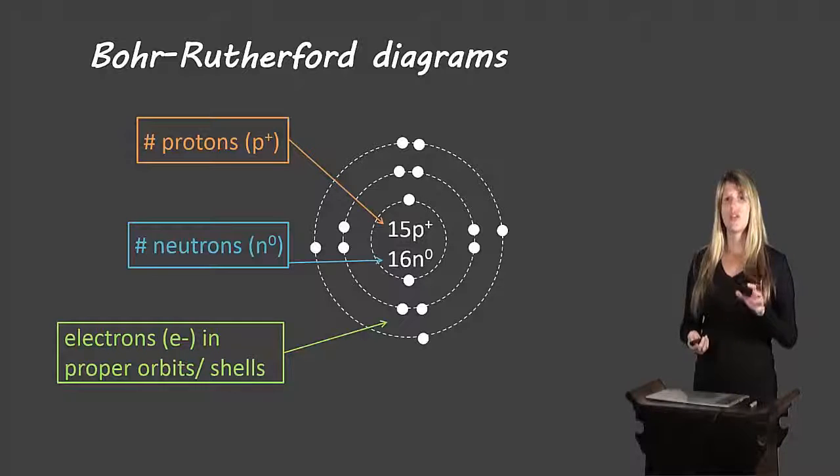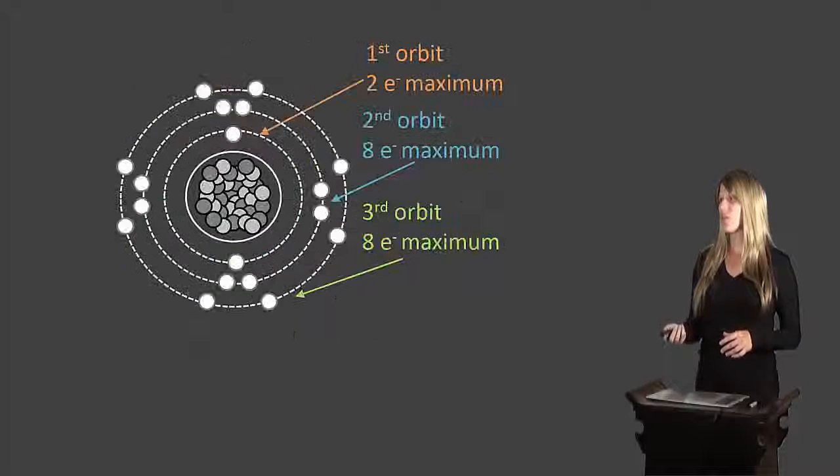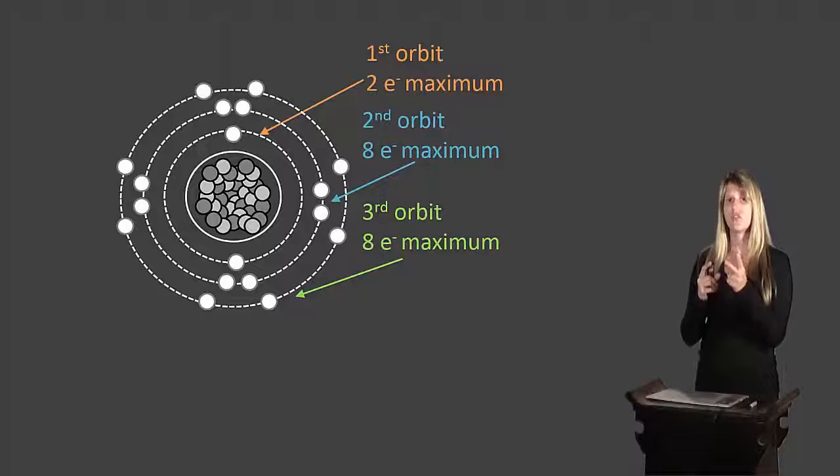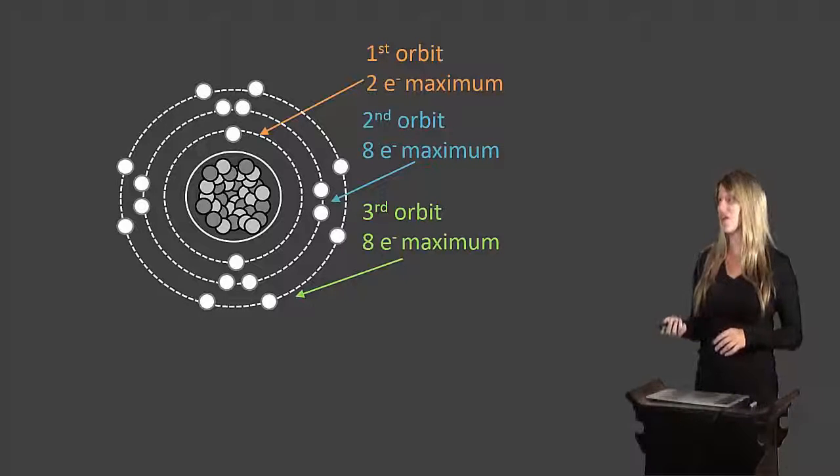Now these electrons need to be in very specific shells or very specific orbits outside the nucleus. So how do we know where to put them? Well, there are some rules. In the very first shell that surrounds the nucleus, we can fit two electrons and only two. The next shell, we can fit eight. And then the next shell, we can fit eight. Again, in those two shells that fit eight, we can't fit any more than eight. So it's two maximum, eight maximum, and then eight maximum. Beyond that, you don't need to know for this course what the maximums are.